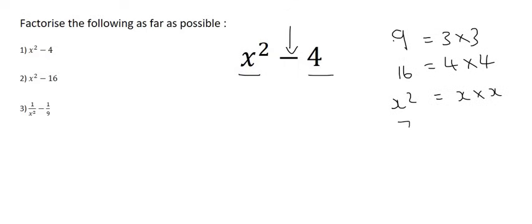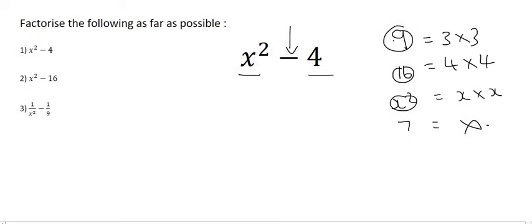What times what gives you 7? Aha! So 7 is not a perfect square, because we don't know two numbers that can multiply to give us 7. And so perfect squares are numbers like 9, 16, x squared, and 25, for example. Anything that can be obtained when you multiply two numbers that are the same together.